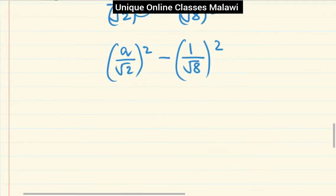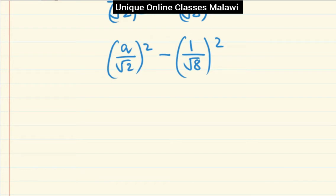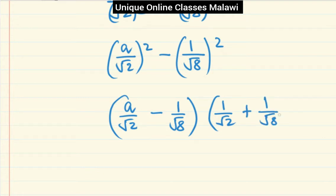This is the difference of two squares, so you're gonna have a over root two, then minus one over root eight. The other bracket is a over root two, then plus one over root eight. And here we're gonna simplify this one further.